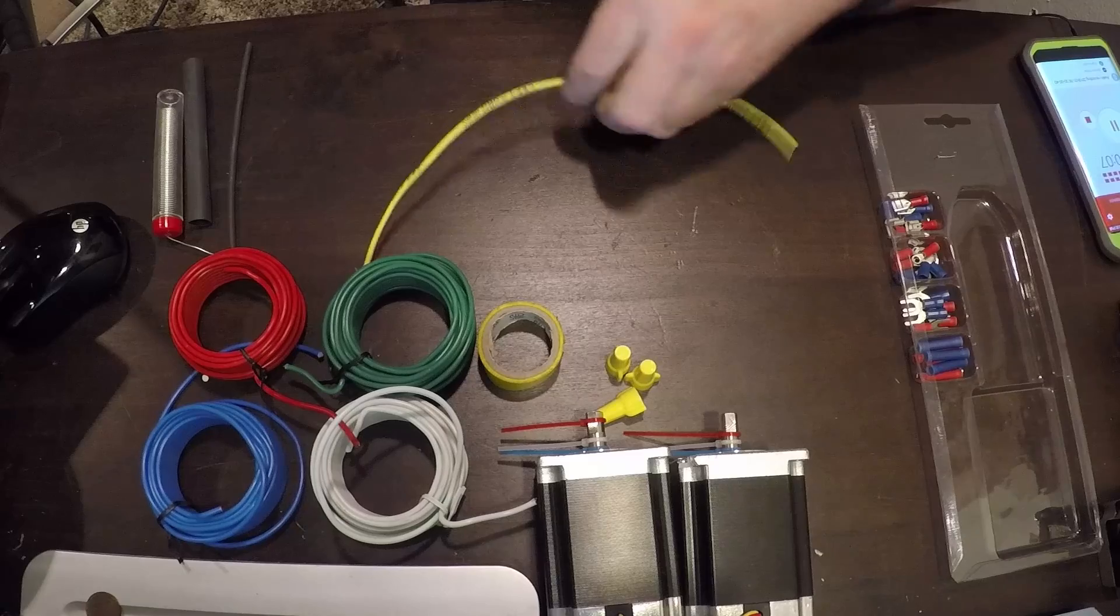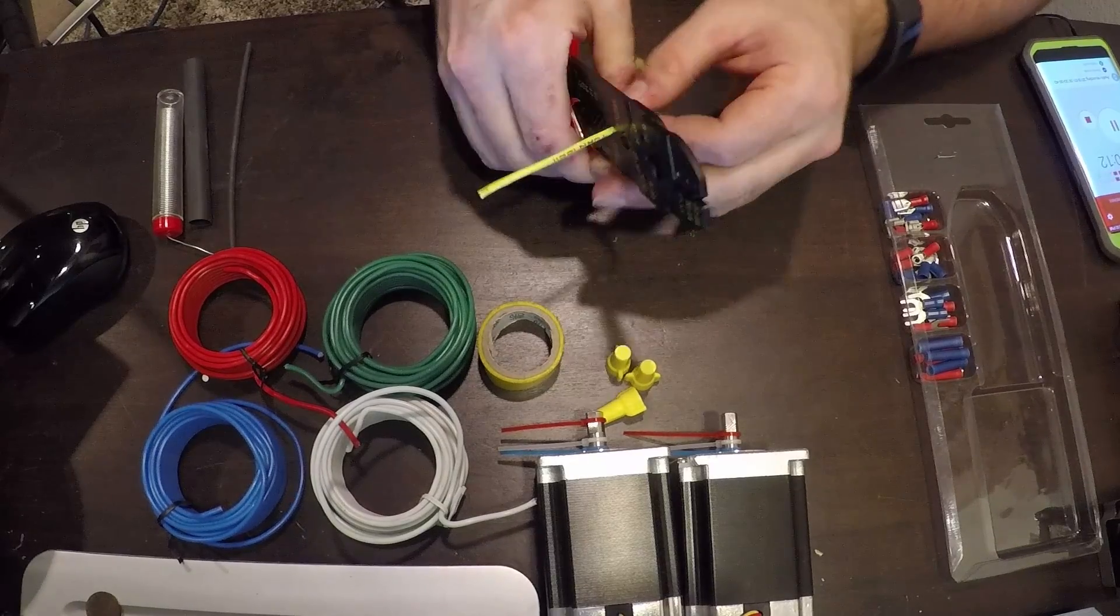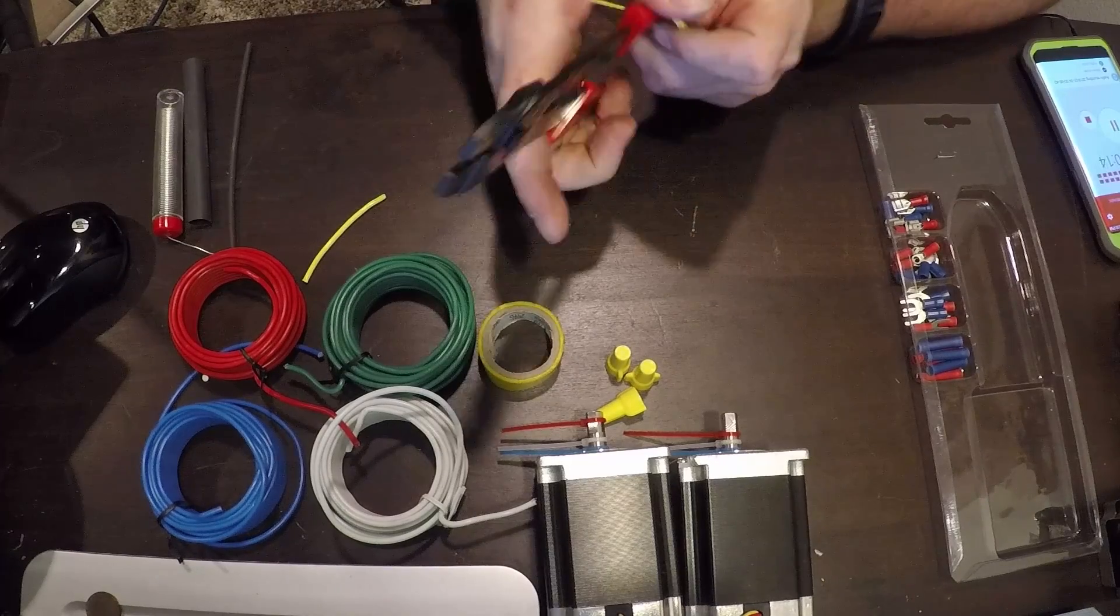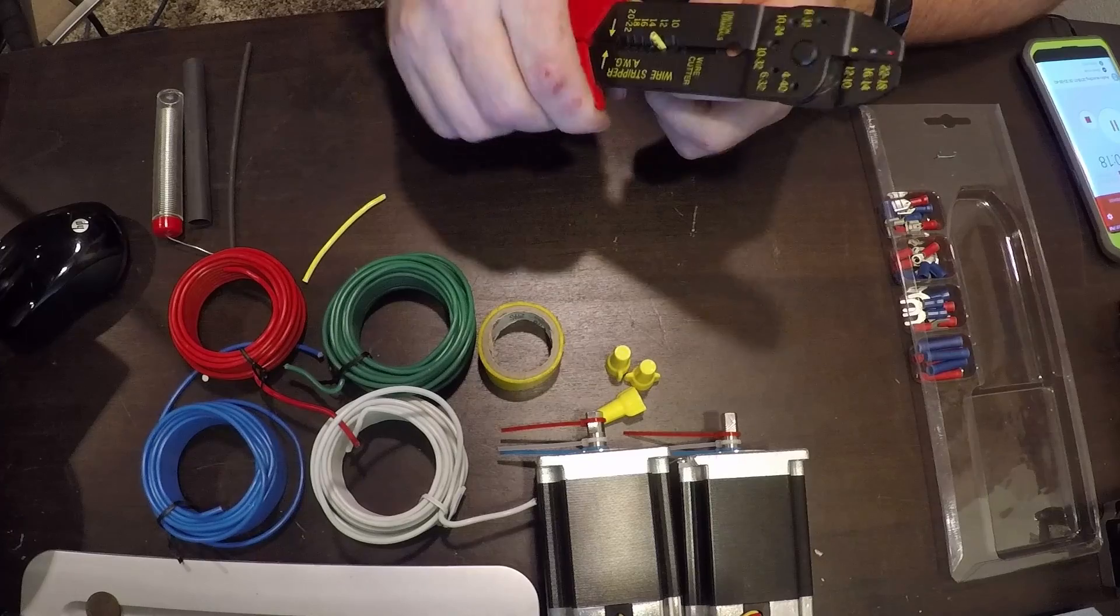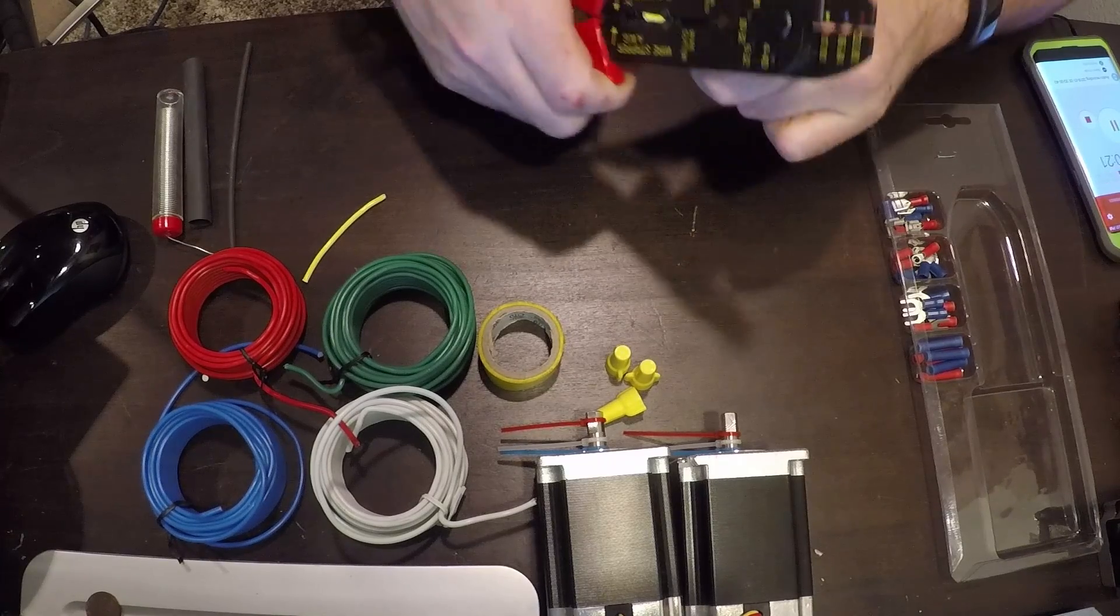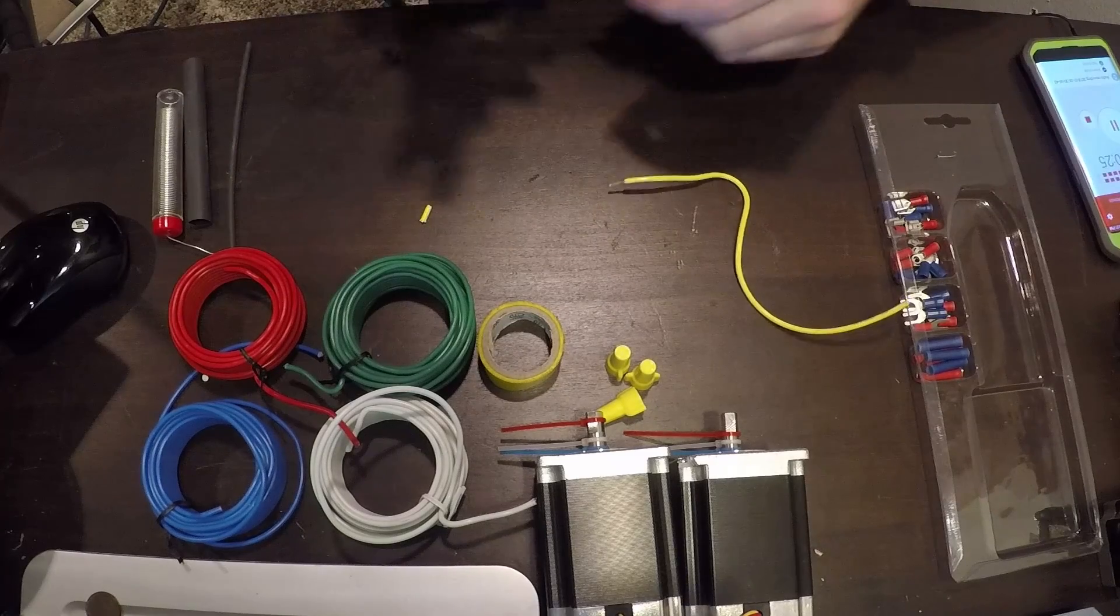Definitely one of the things you want to consider before you decide how you're going to attach something is how permanent you want it to be. So a lot of people, when they're doing a real temporary connection, they tend to use electrical tape, which is probably the most vulgar way you can make an attachment. It works, but it's just not one of the pretty things I like to see in life.